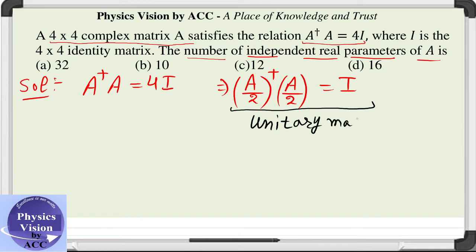Hence we can say that whatever the number of independent parameters are there in a unitary matrix, the same number of independent parameters will be there in the given matrix A. So we just need to calculate the number of independent parameters of a unitary matrix of 4 by 4 dimensions.